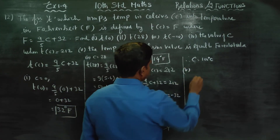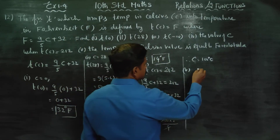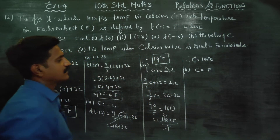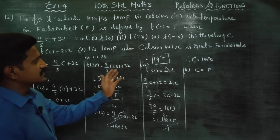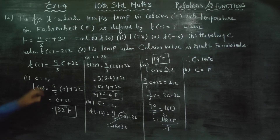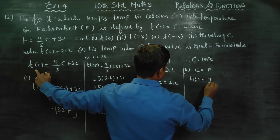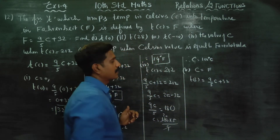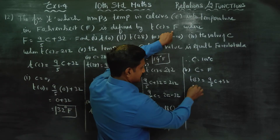5th subdivision: find the temperature when Celsius equals Fahrenheit, i.e., when C is equal to F. The formula is T of C equals 9 by 5 C plus 32, and T of C is equal to Fahrenheit. So we substitute F for C: 9 by 5 C plus 32 equals Fahrenheit.